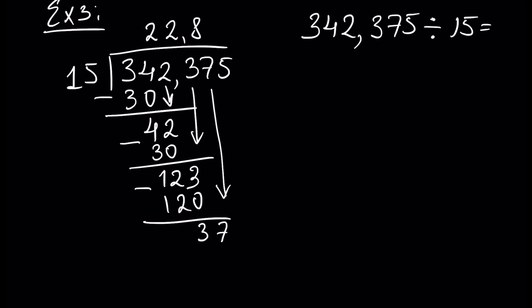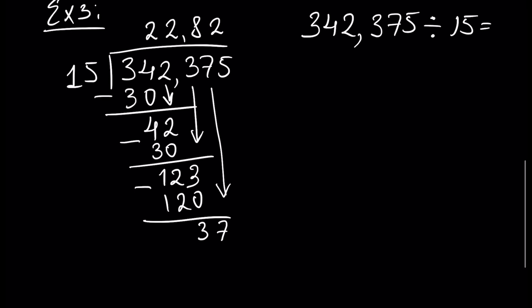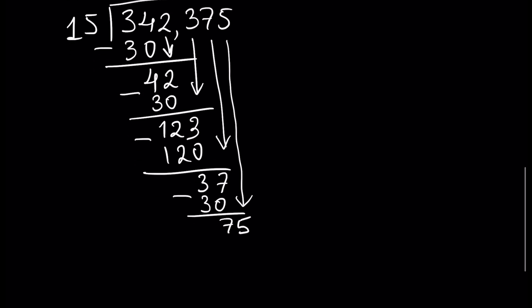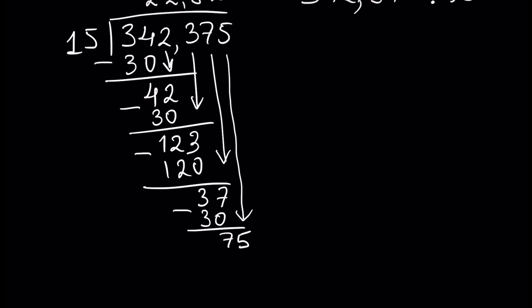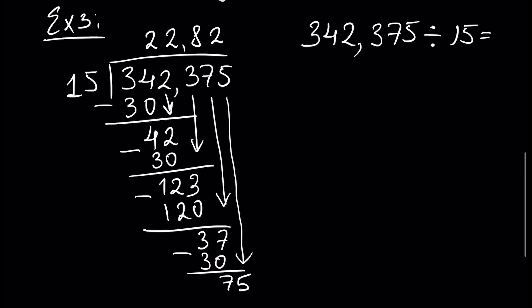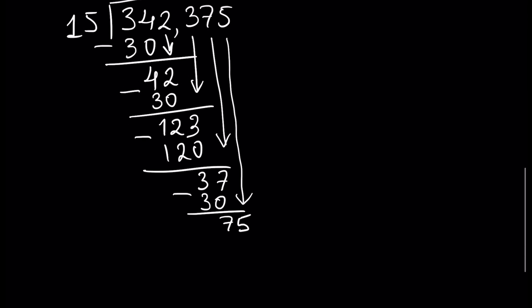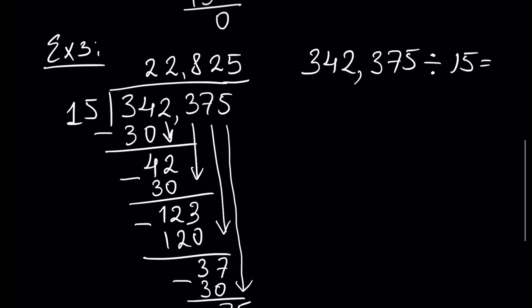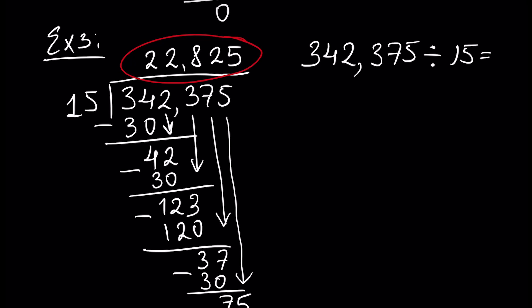Inside 37 we have 15 two times. And 2 times 15 is 30, so we write minus 30, which is 7. We write number 5 here. How many 15s we have inside 75? Exactly 5. And 5 times 15 is 75. 75 minus 75 is 0, and we have our answer: 342.375 divided by 15 is 22.825.